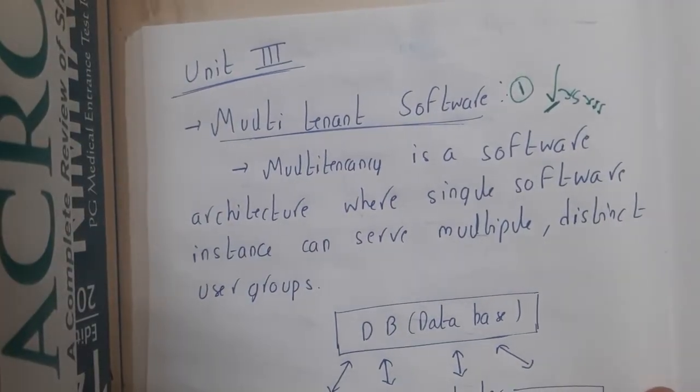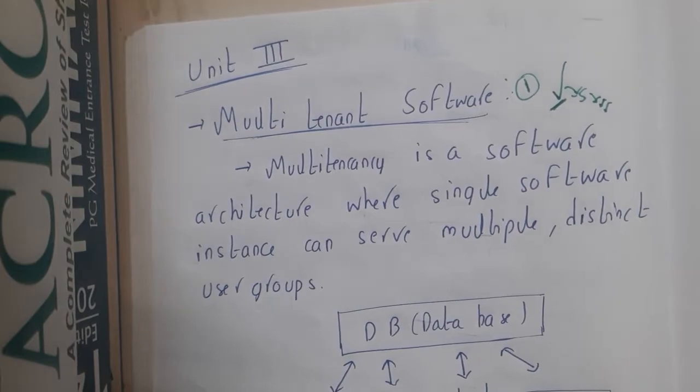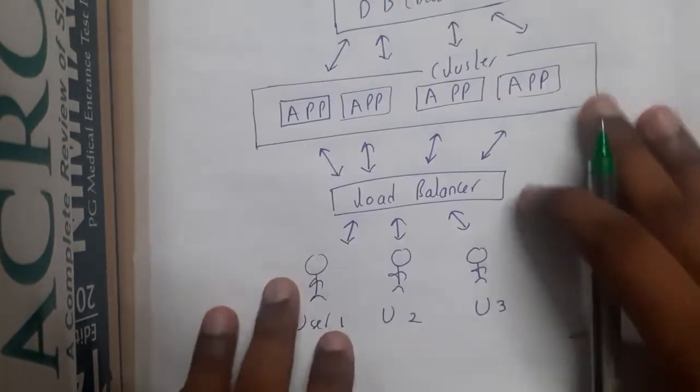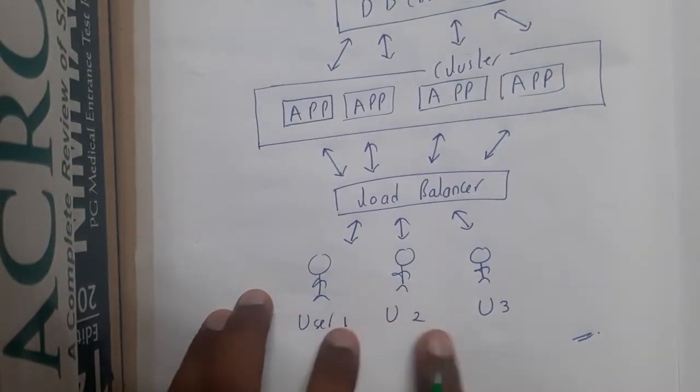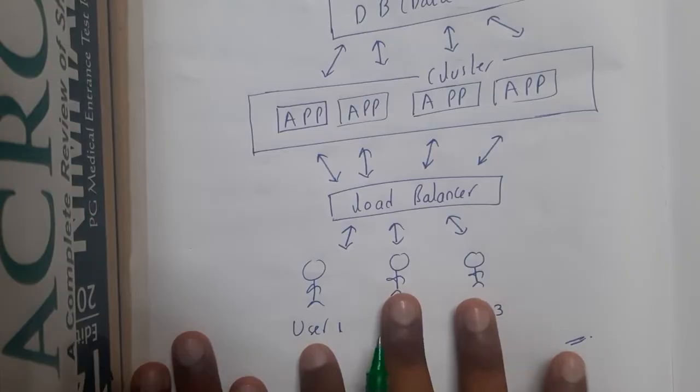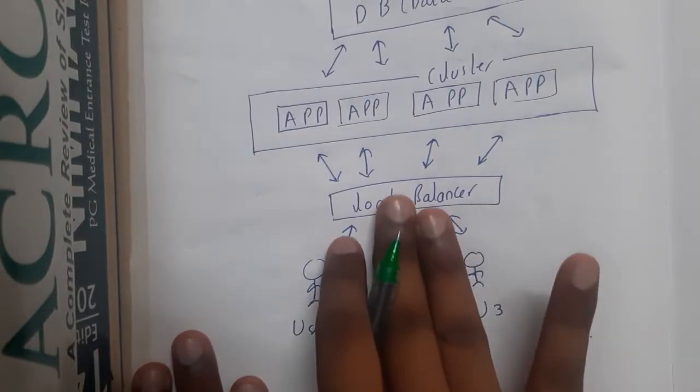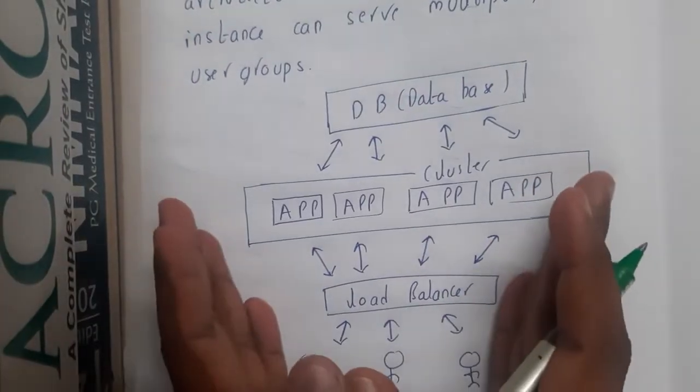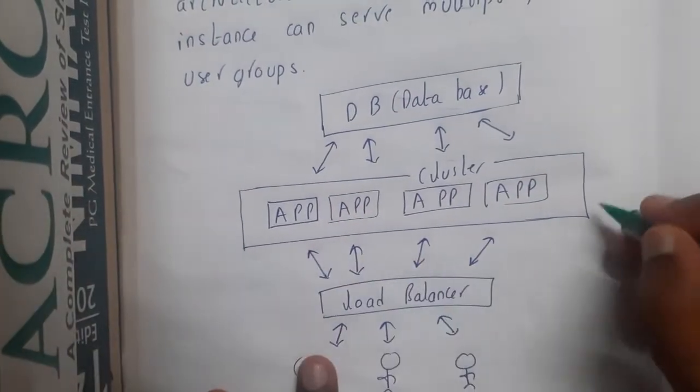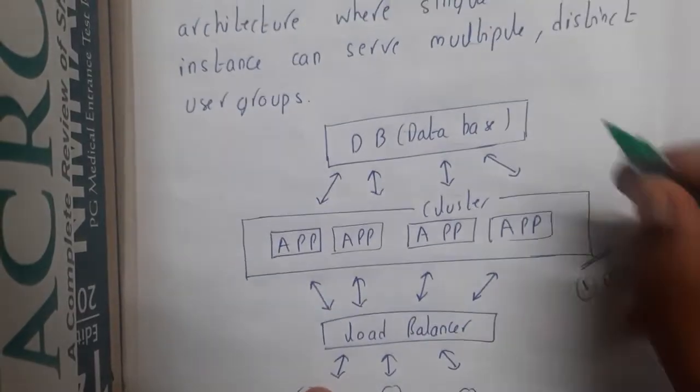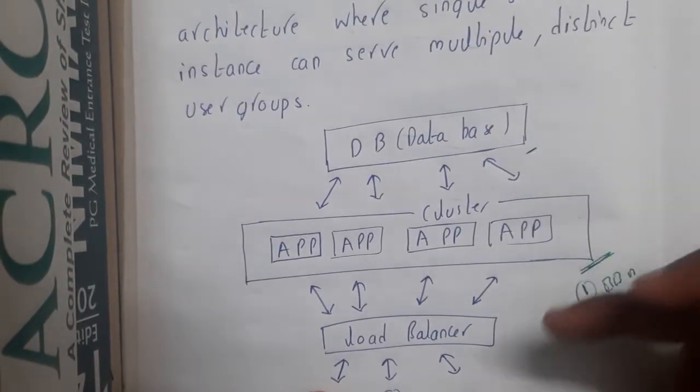So what is a multi-tenant software? Basically, if you are having multiple users, when they request for something, the load balancer will divide it among multiple applications. One application will be selected. Here we are having a single cluster with multiple applications and one common database.